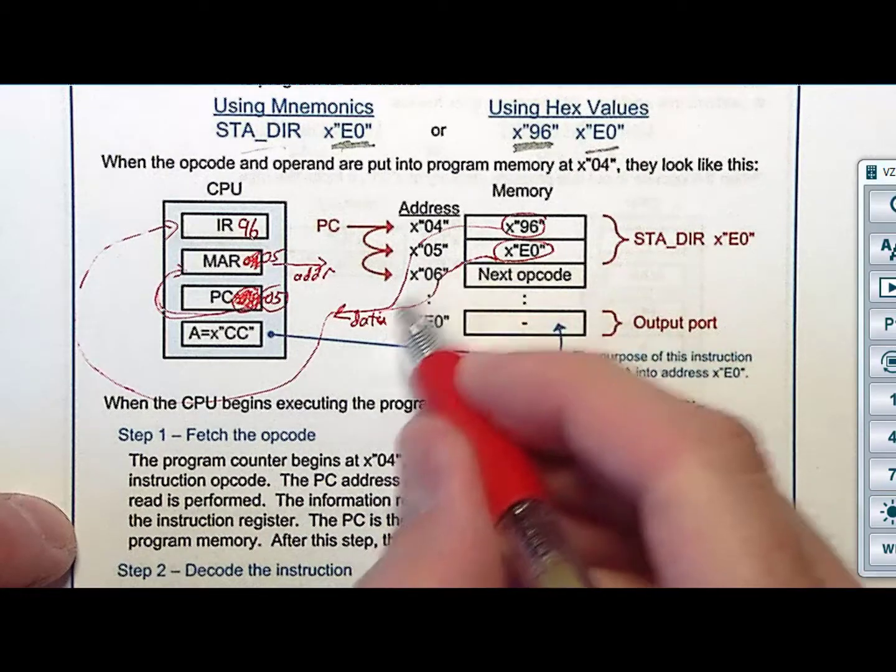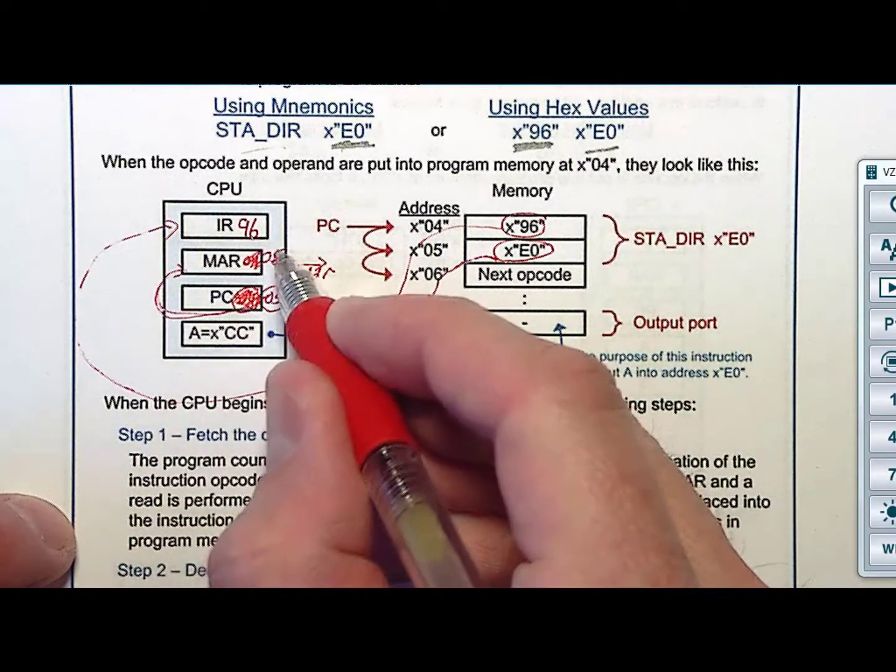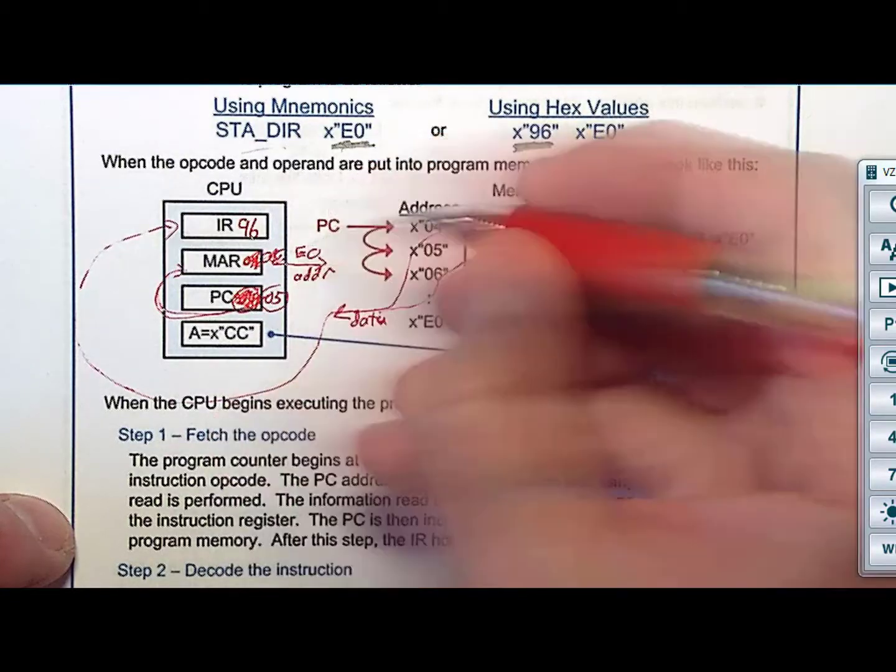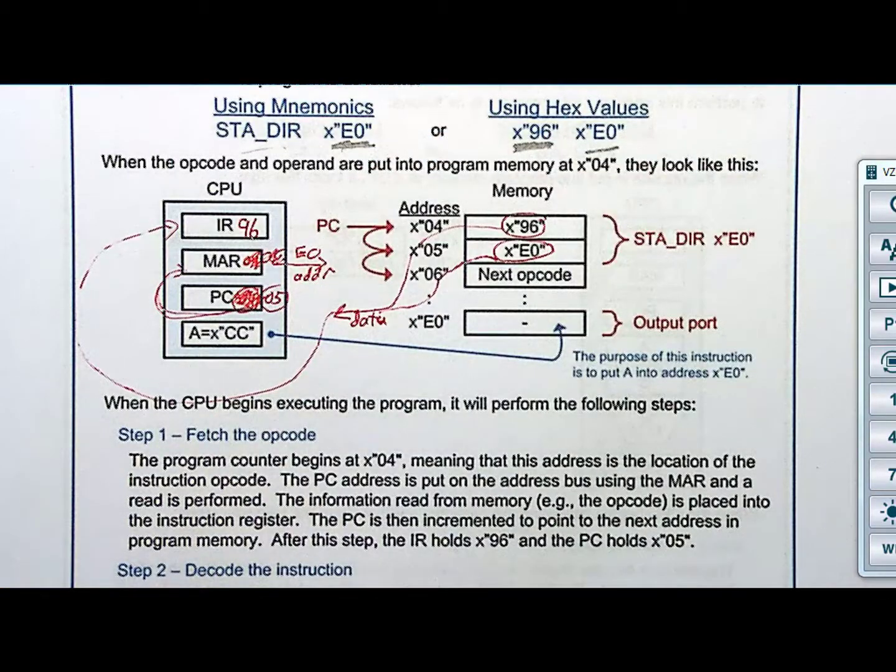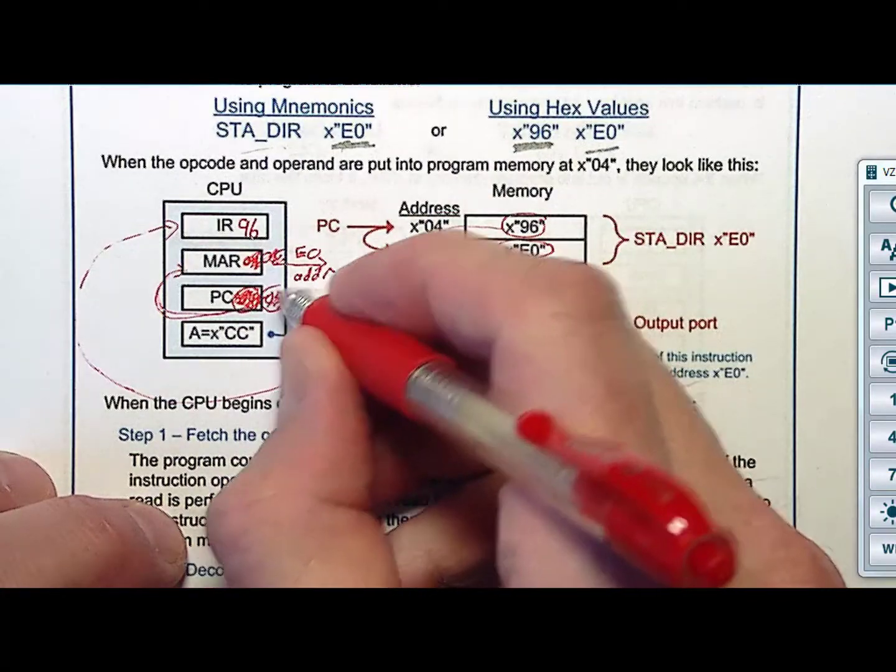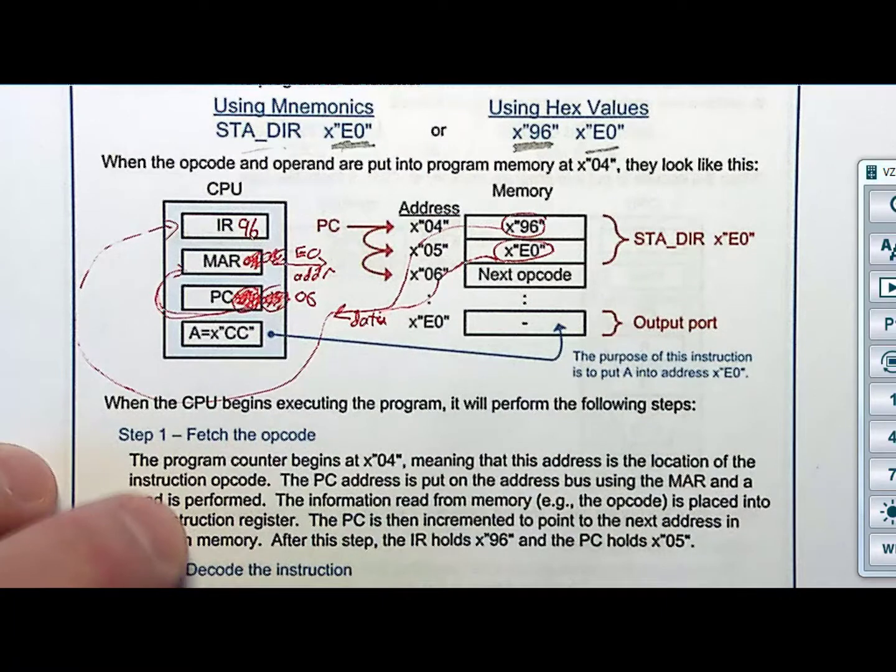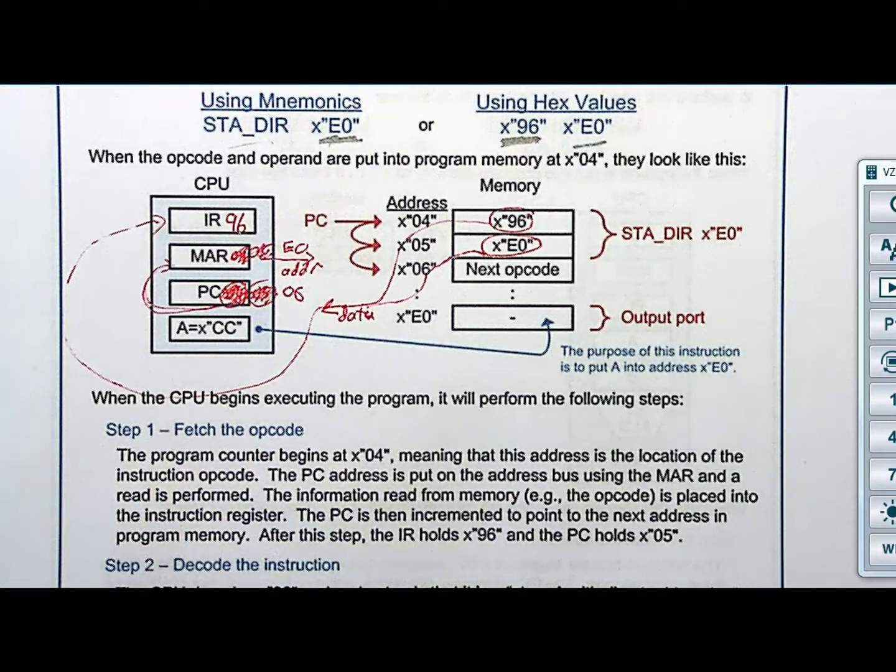So now E0 is going to come cruising back over. 05 is now overwritten with E0. Oh boy. We are getting ready to go write. But we need to do one more thing. What should I do? Increment the program counter. So I go to 06. What is that 06? It's the op code of the next instruction. I don't know what it is, but I know where it is.